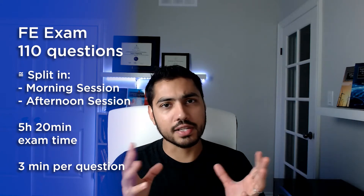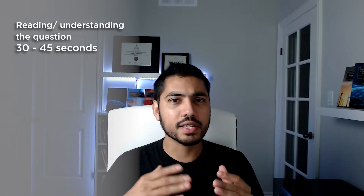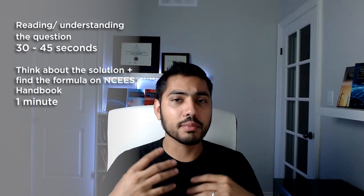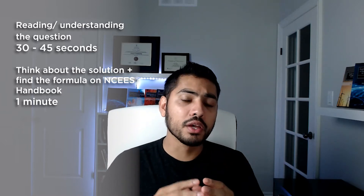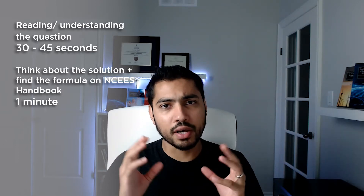The FE exam contains 110 questions, which are more or less evenly split between the morning session and the afternoon session. The total exam time is 5 hours and 20 minutes, which translates into just under 3 minutes per question. That's a tough ask, because reading the question alone can take 30 to 45 seconds, then you collect your thoughts and think about how to approach the problem, and you go through the NCEES FE reference handbook to find the correct formula.